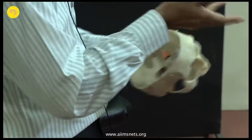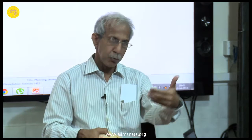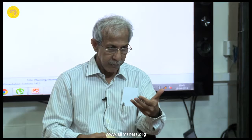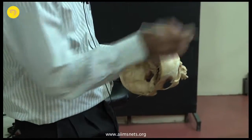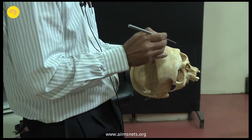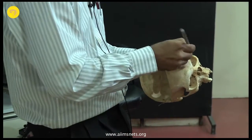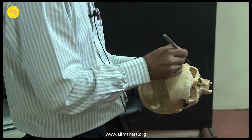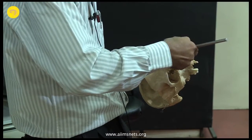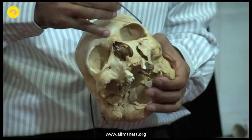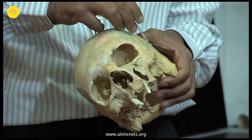The orbitozygomatic approach is my favorite. I do it in a single piece. It is a good approach because it gives you a basal trajectory and can be used for complex anterior circulation aneurysms, posterior circulation aneurysms, and for the petroclival region — because it allows you to look up into the brain without having to retract it. A standard orbitozygomatic involves exposure of the frontal region, temporal region, orbit, and zygomatic region. The bones to remove: frontal and temporal parts, part of the orbital roof, across the zygoma, and the root of the zygomatic process.